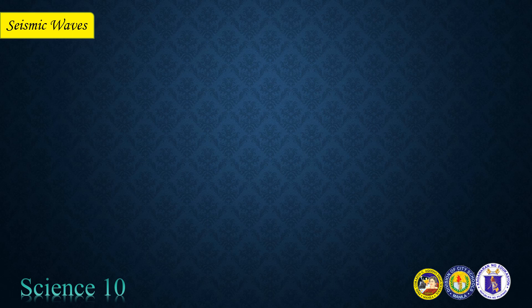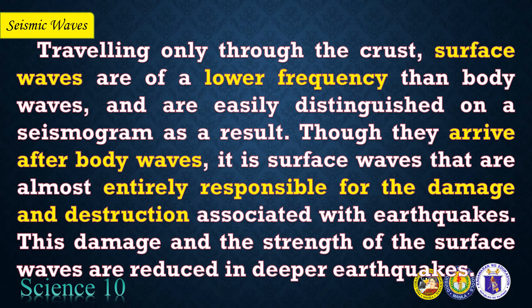We move on to the second type of seismic waves: the surface waves. Traveling only through the crust, surface waves are of a lower frequency than body waves and are easily distinguished on a seismogram as a result. Though they arrive after body waves, it is surface waves that are almost entirely responsible for the damage and destruction associated with earthquakes. This damage and the strength of the surface waves are reduced in deeper earthquakes.